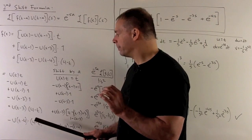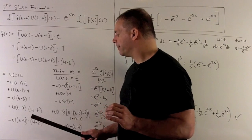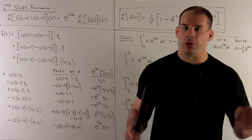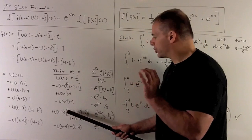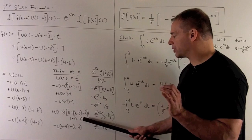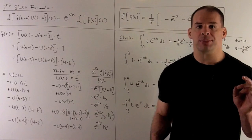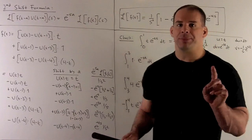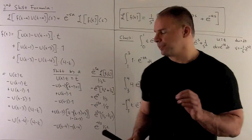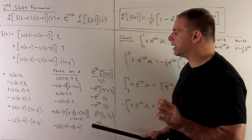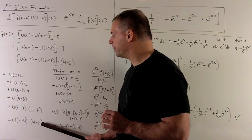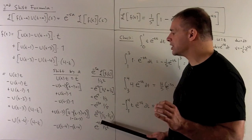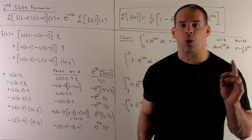The next term is u(t minus 3) times (4 minus t). It's not shifted correctly, so we replace t with (t minus 3) plus 3. Distributing the minus sign, this collapses to 1 minus (t minus 3). With a equals 3, we get e to the minus 3s, and the 1 goes to 1 over s while the (t minus 3) — treated as just t — goes to 1 over s squared. Finally, u(t minus 4) times (4 minus t) with a minus sign: this turns into a (t minus 4) term, with a equals 4 giving e to the minus 4s times 1 over s squared.